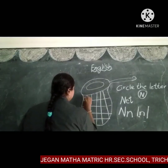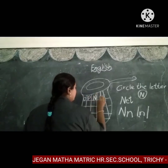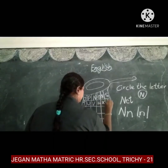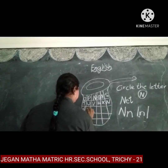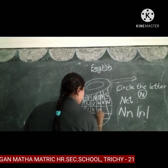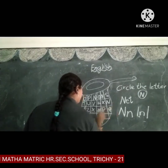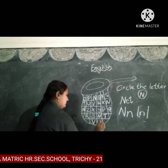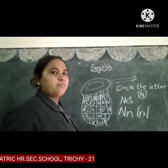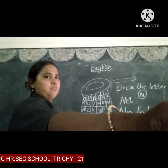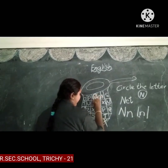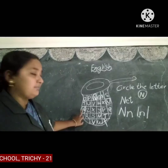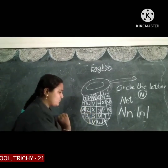Now I'm going to write this letter N. So this is N — circle the letter N. Where can you find N, children? Circle the letter N. Then where can you find N? Here. Very good. Then where else can you find N? Here.